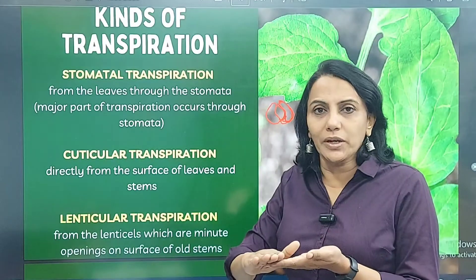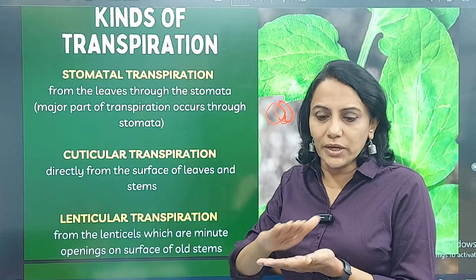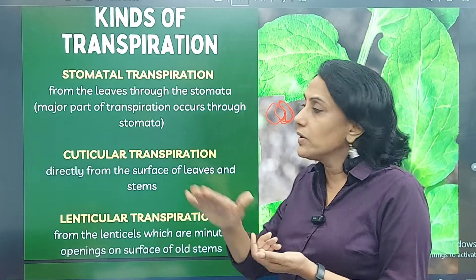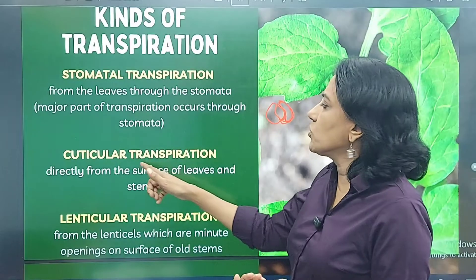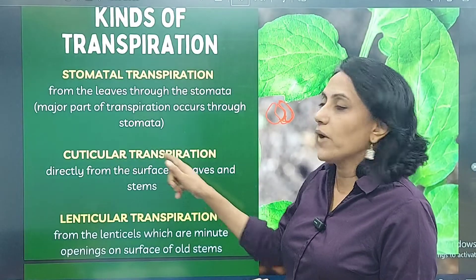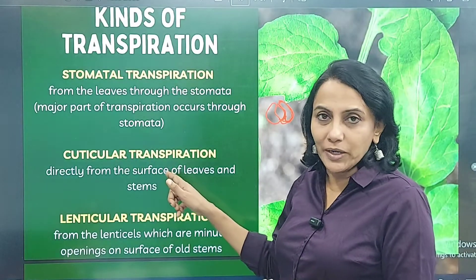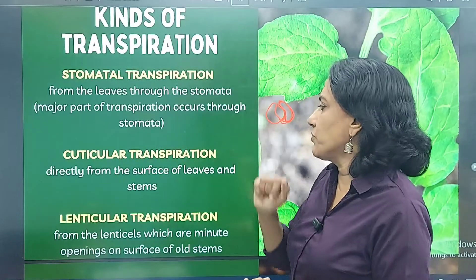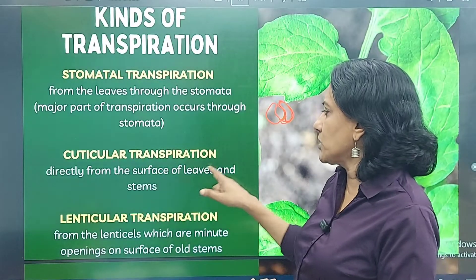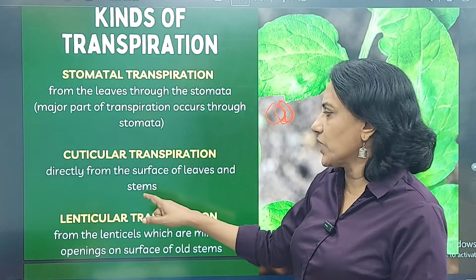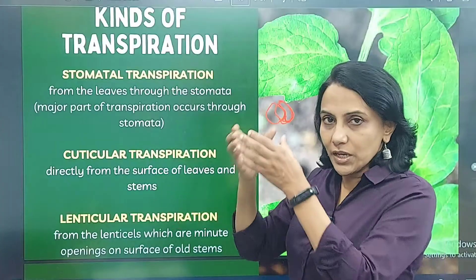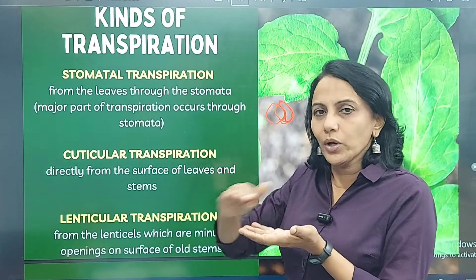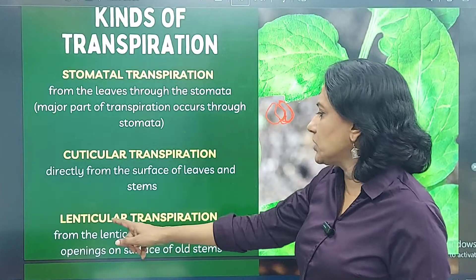Second is cuticular transpiration. The cuticle is a leathery surface on the leaf which tries to reduce transpiration. Cuticular transpiration happens directly from the surface of the leaves and the stems — from the cuticle of leaves and stems.